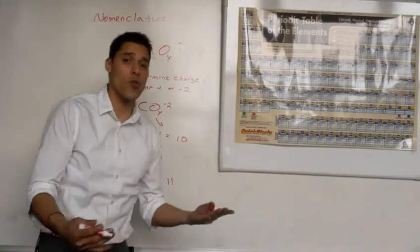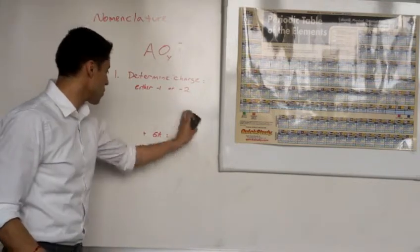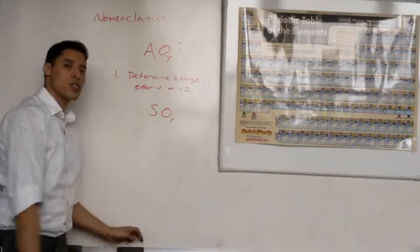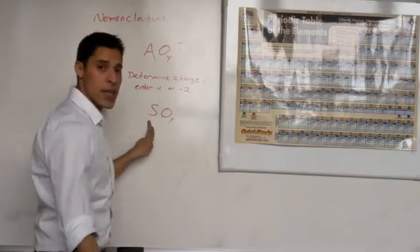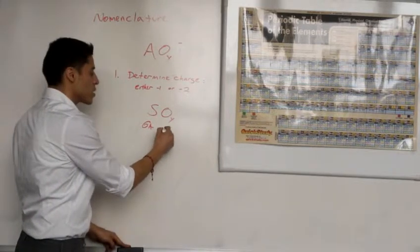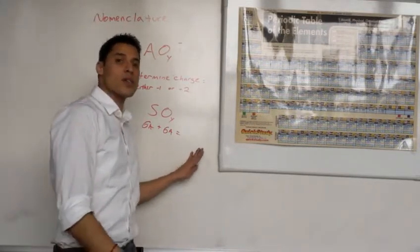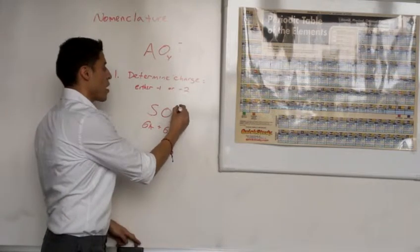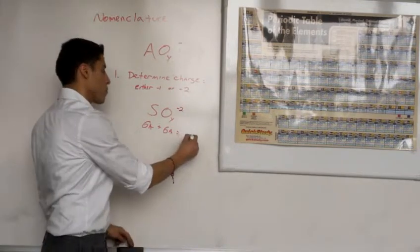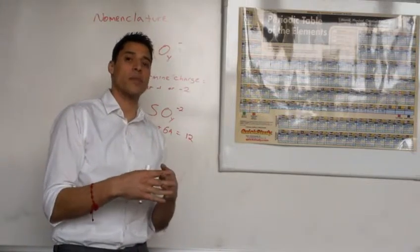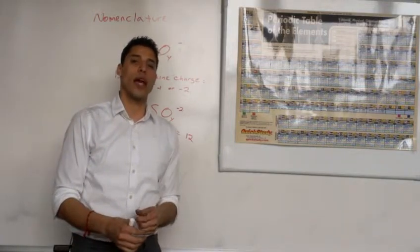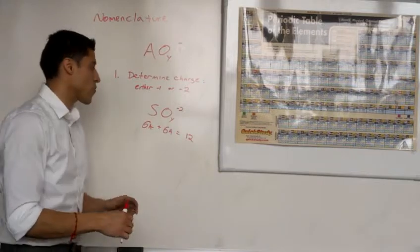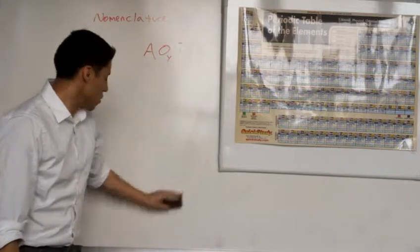If we do sulfate, we're going to have sulfur bonded to a certain number of oxygens. We first determine the charge. Sulfur is in the 6A group, and oxygen is also in the 6A group. We add these up, giving us an even number sum — so an even charge, meaning sulfate is going to have a negative 2 charge. To summarize: add up the group numbers; even sum means negative 2 charge, odd sum means negative 1 charge. The only exception is anything with phosphorus, which is always negative 3.